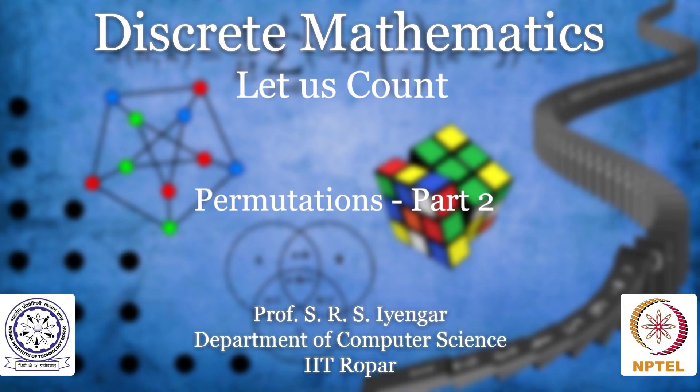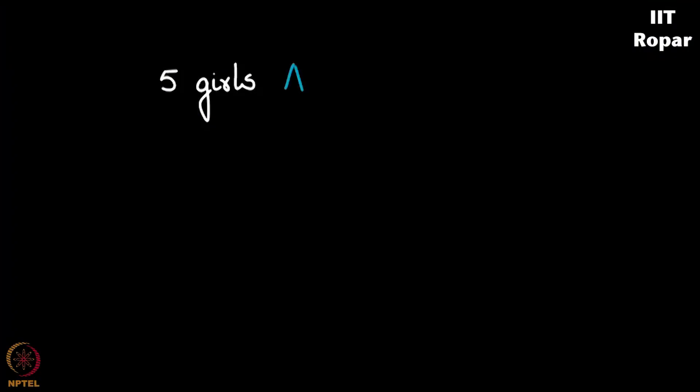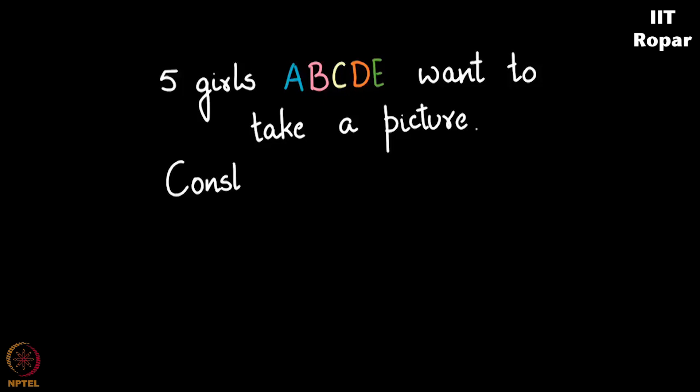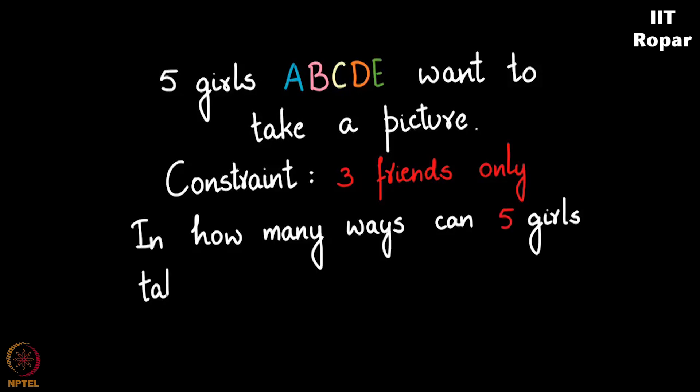We saw a video where five people, let's say A, B, C, D, and E, these five girls want to come forward and then take a picture, but they have a small constraint that the picture should be taken with three friends only, which means two people should step back. In how many ways can these five girls take a picture ensuring that the picture comprises of precisely three people?